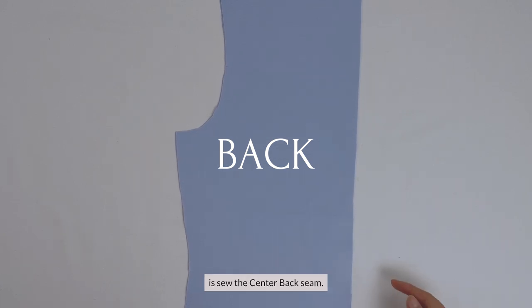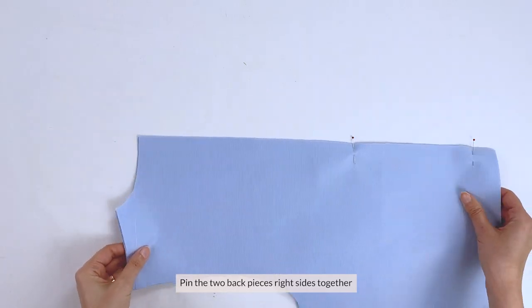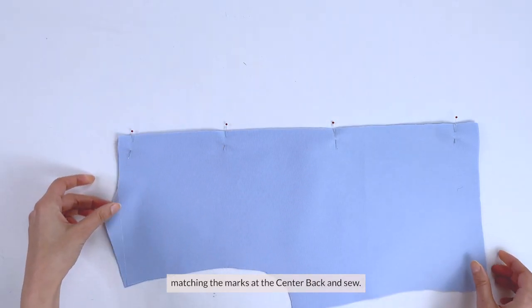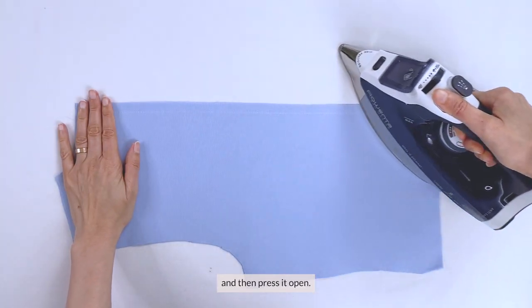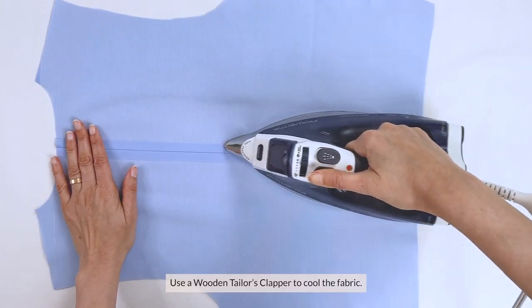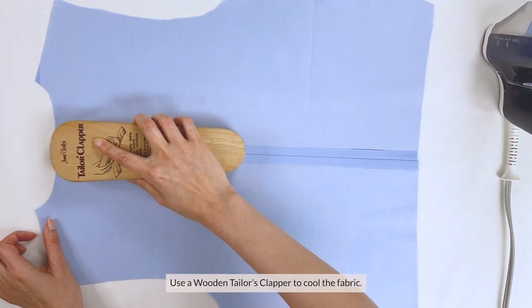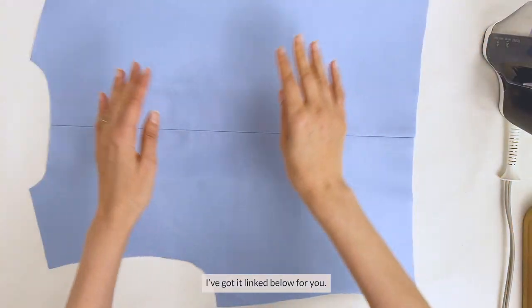The first thing we're going to do is sew the center back seam. Pin the two back pieces right sides together, matching the marks at the center back and sew. After that, press the center seam flat and then press it open. Use a wooden tailor's clapper to cool the fabric, and if you don't have one yet, I have one link below for you.